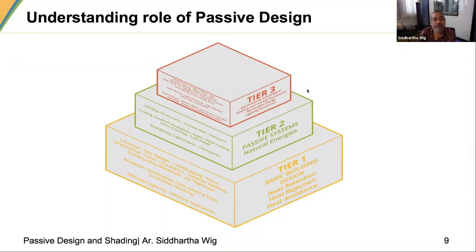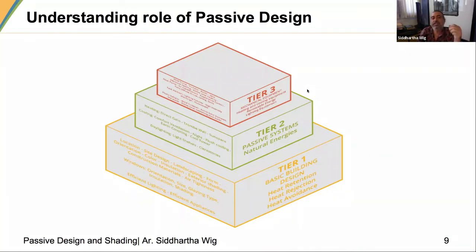This has been aptly put in a three-tier system you have already looked at in your self-learning modules. The first two tiers are very important — basic building design and passive systems — where you are using natural potential at site: natural energies and natural sinks available to you.